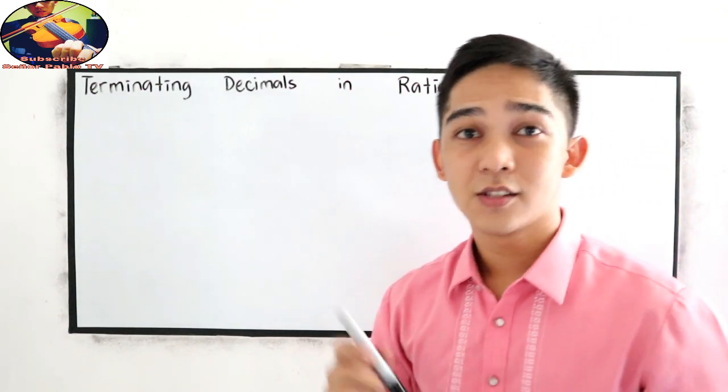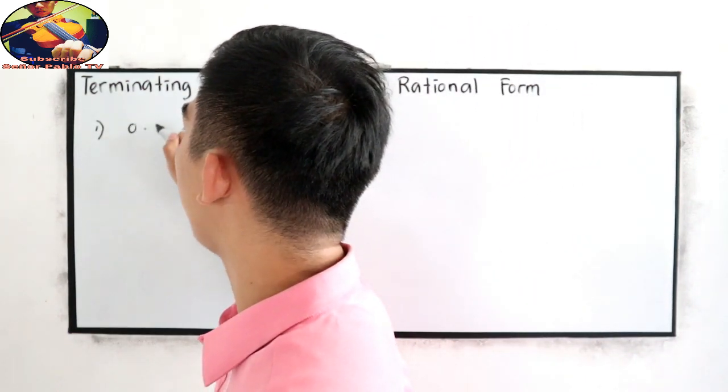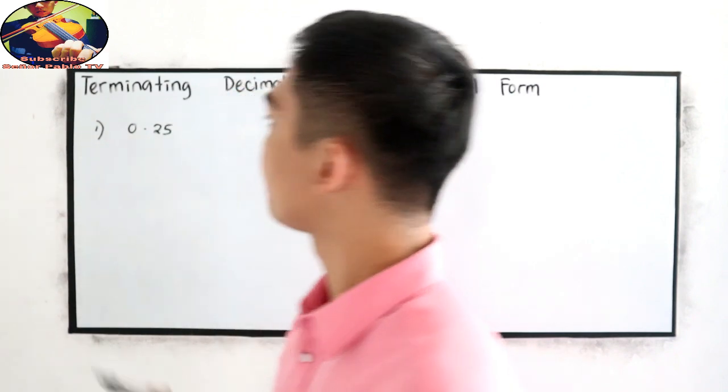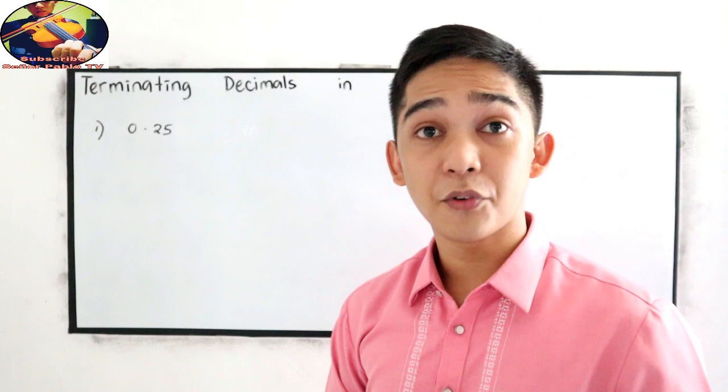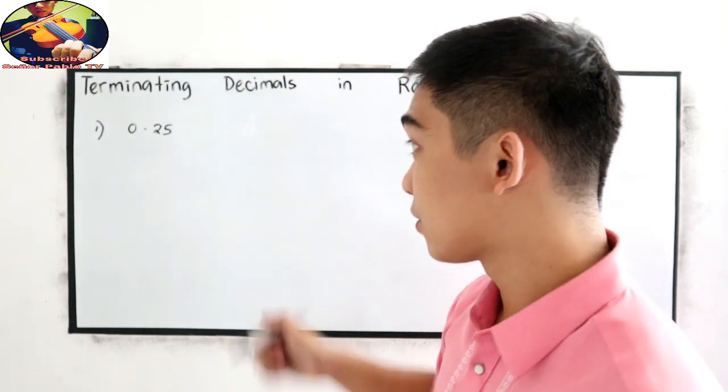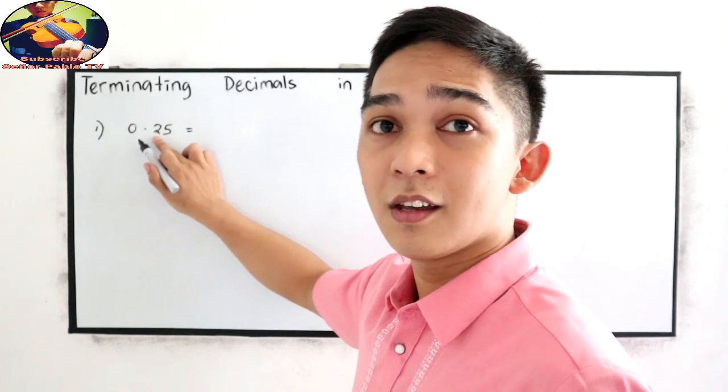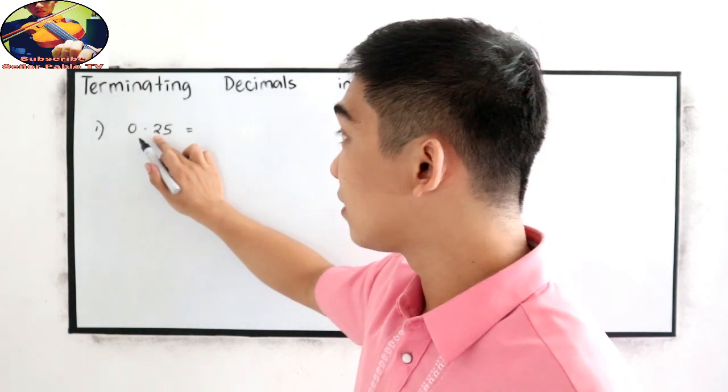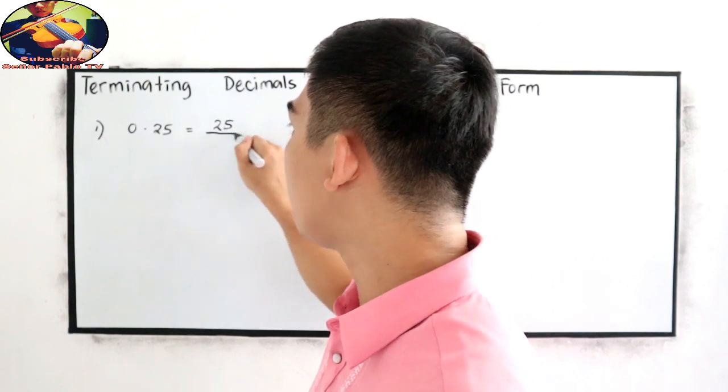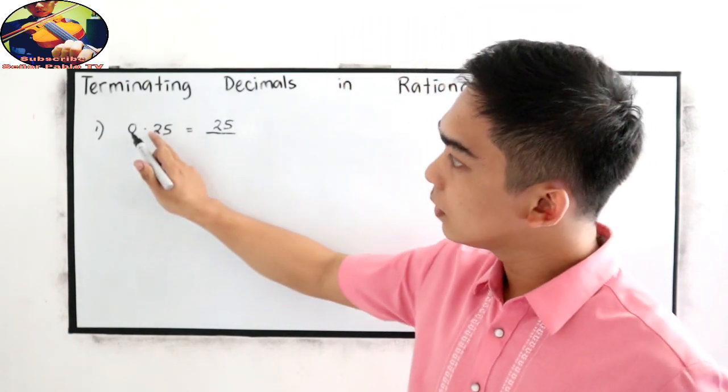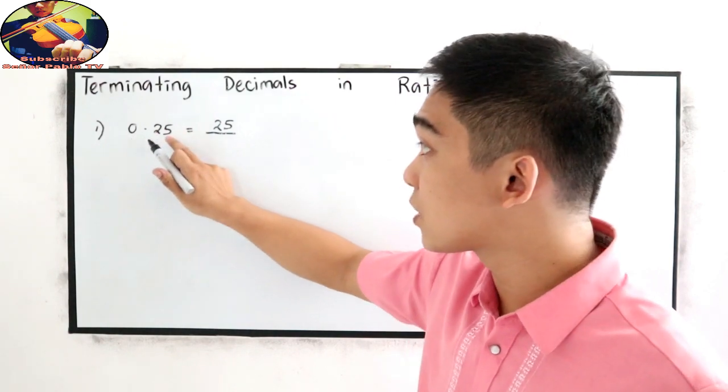So let's say we have 0.25. Write into rational form. This is equal to just copy our whole number. In this case, 25 over count the number of decimal points. So in this case, 1, 2.